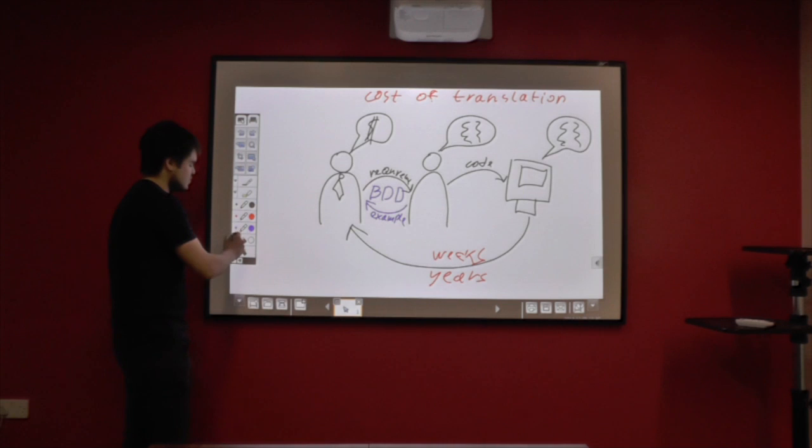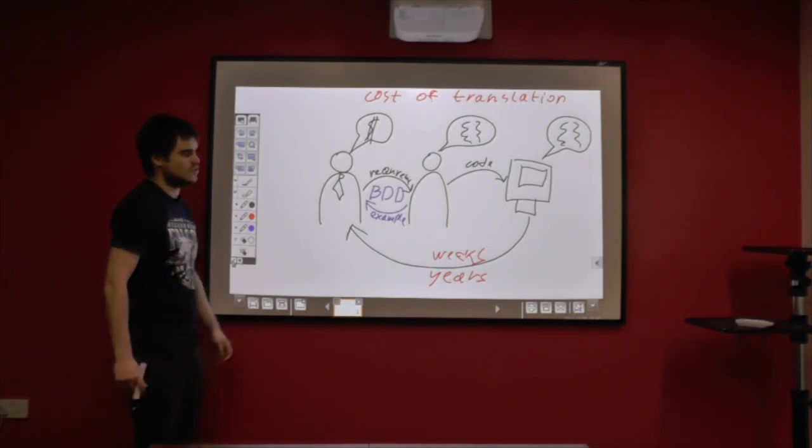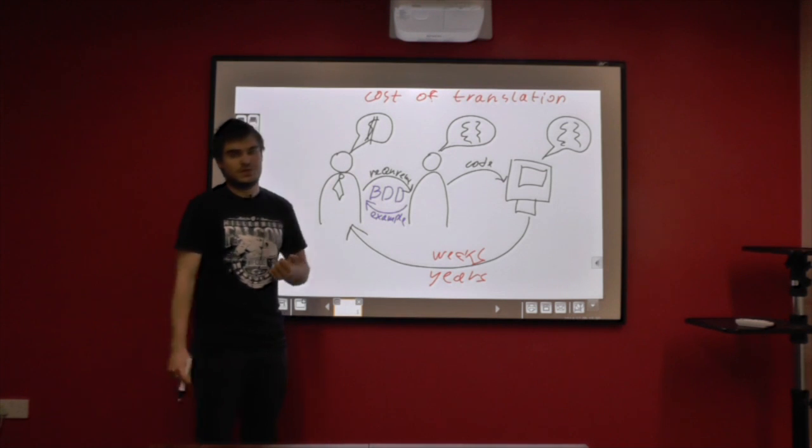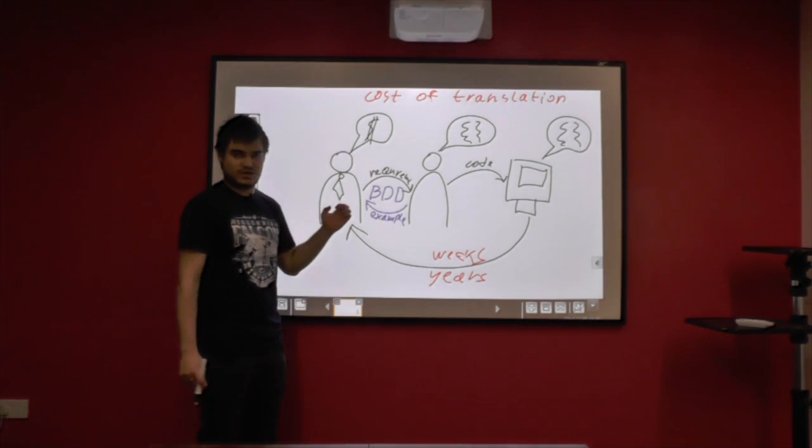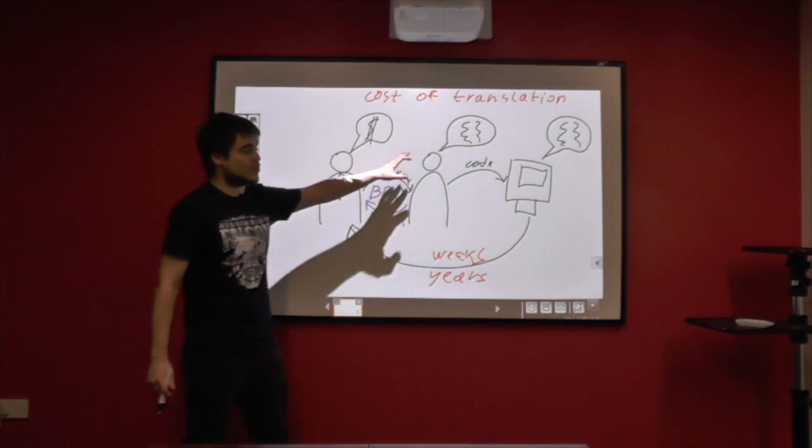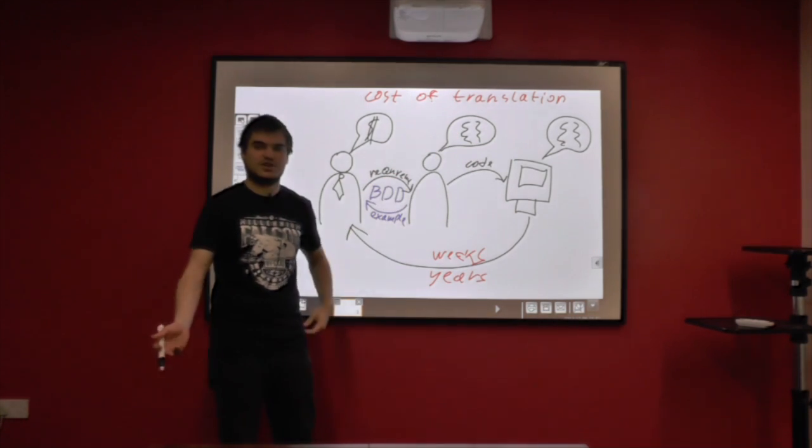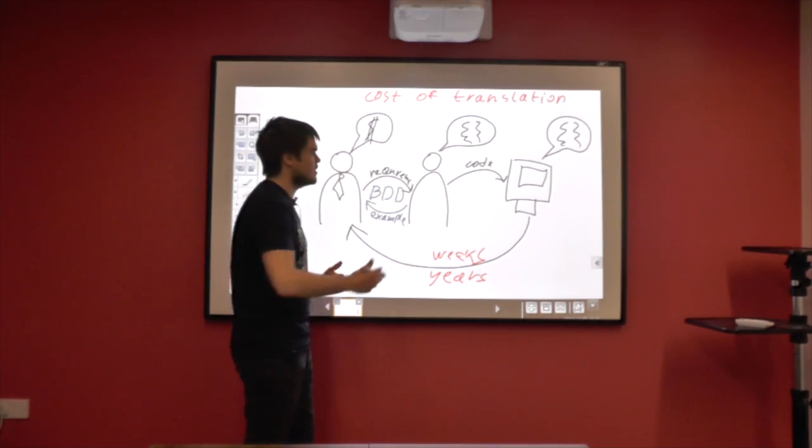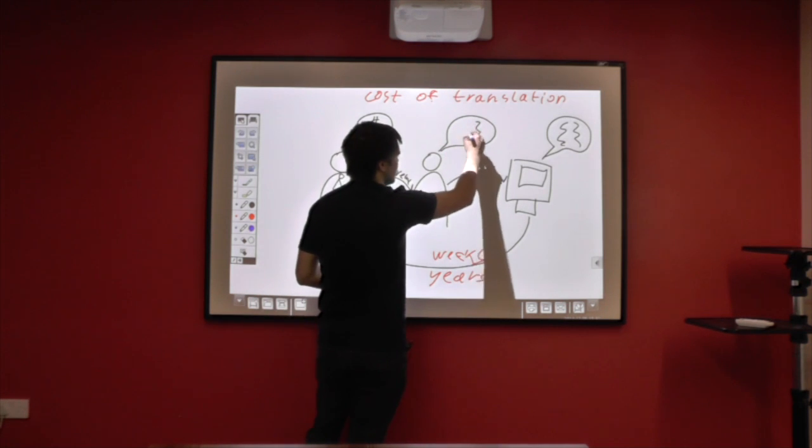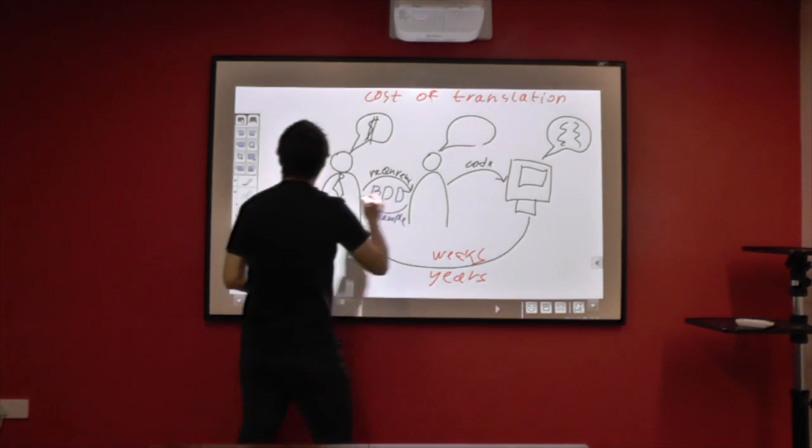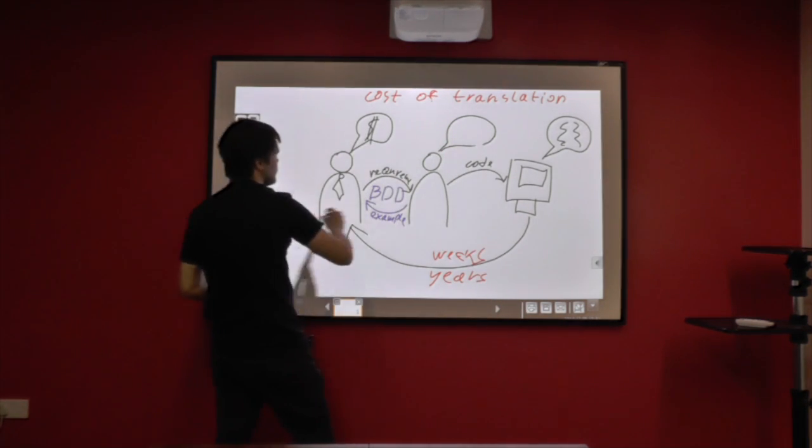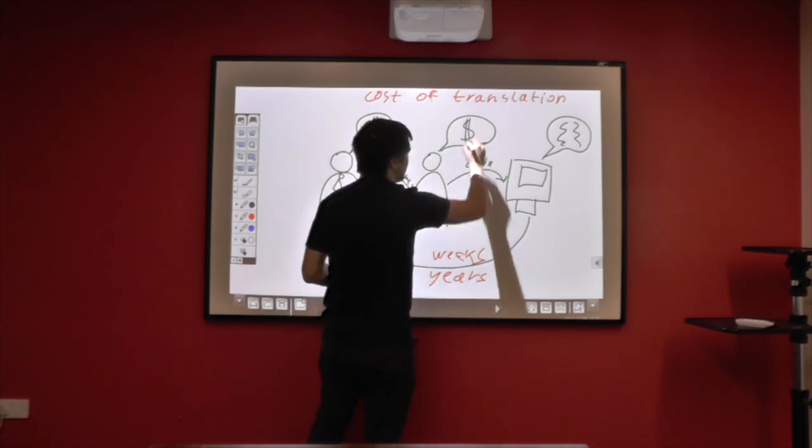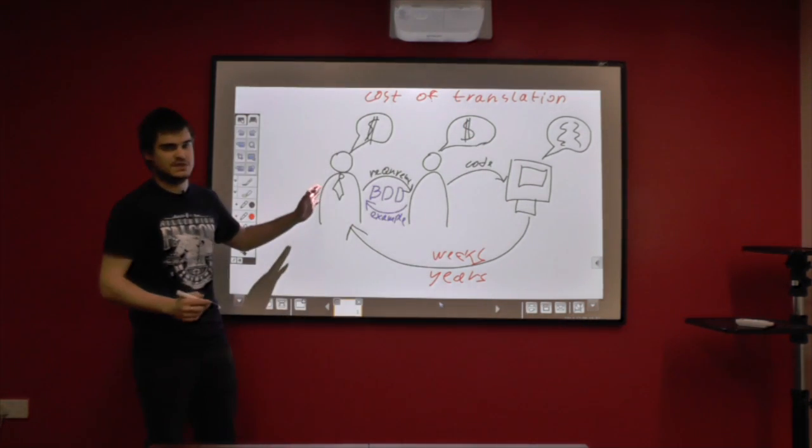Now, the interesting thing about examples is that in order to provide examples and understand examples by developers, you need to teach developers to understand language business uses when it provides examples. And it's not programming language, it's not architectural language, it's not design language, it's not programming logic. It's usually business language. So in order to make this happen or make this possible, you need to teach developers to talk in the same language that business does.